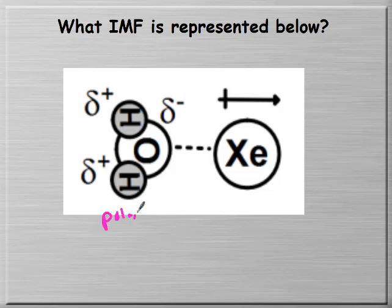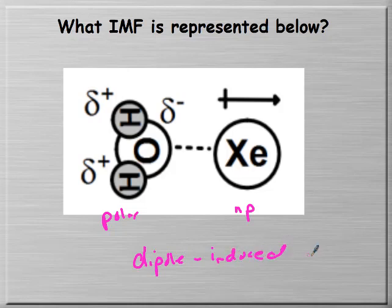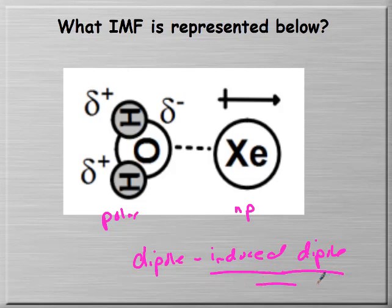Water is polar and xenon is nonpolar, so between a polar and a nonpolar we would have dipole-induced dipole. Xenon shouldn't be polar, but oxygen is slightly negative, and as it approaches xenon it distorts the electron cloud, making it slightly polar or inducing it to be polar, so we get an instantaneous dipole.